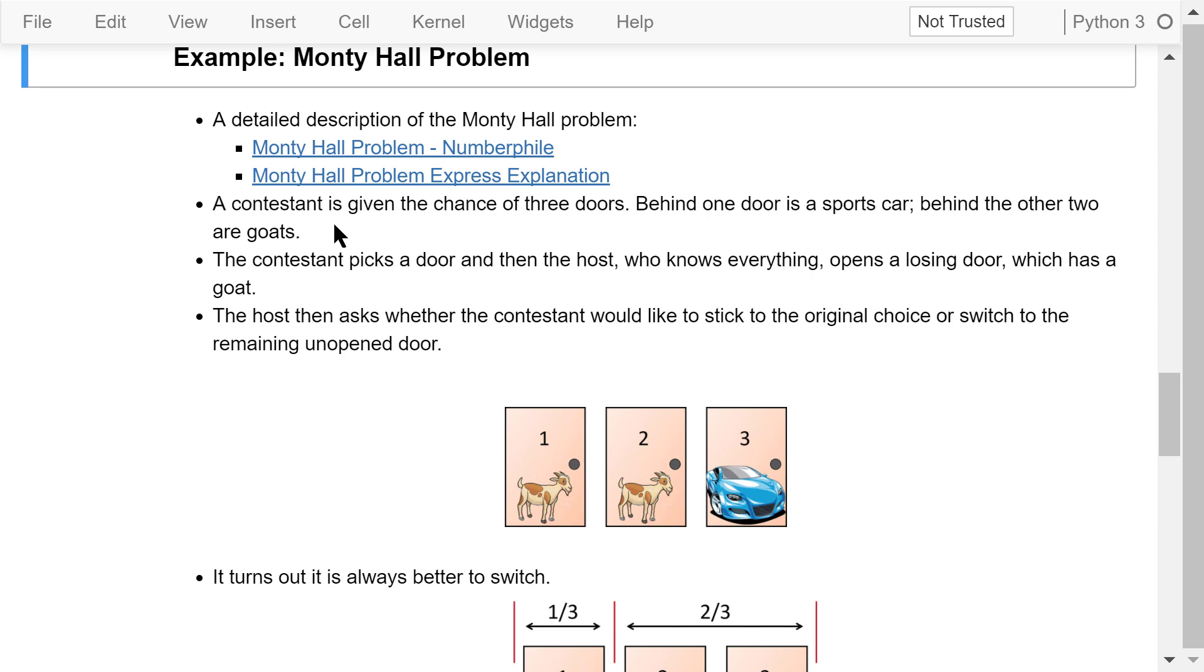The problem is described as follows. A contestant is given the chance of three doors. Behind one door is a sports car, which the contestant really wants to win. Behind the other two doors are goats. Of course, the doors are not transparent glass doors like in these images.